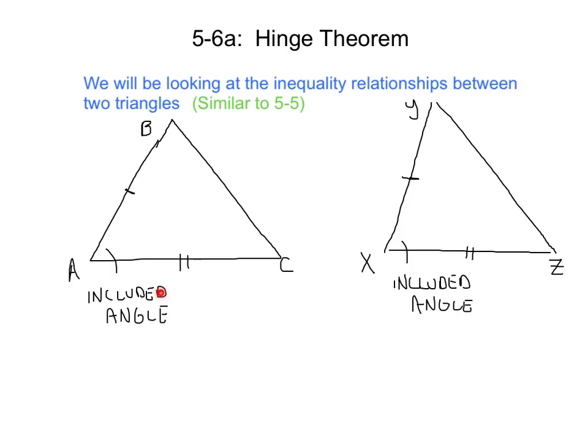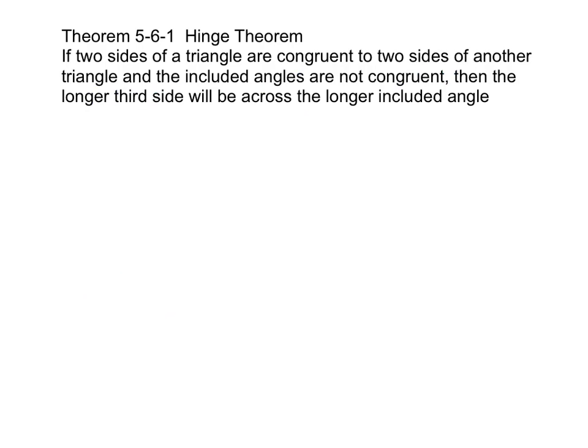So let's go ahead and look at what this theorem says. Theorem 5-6-1, which is the hinge theorem, says that if two sides of a triangle are congruent to two sides of another triangle and the included angles are not congruent, then the longer third side will be across the longer included angle. I know that's a pretty long theorem. But in fact, what it says is not too dissimilar from what 5-5 was about. Let's look at the picture that we just talked about so we can make some relationships and understand this theorem better.